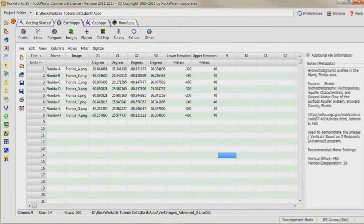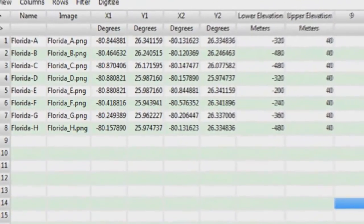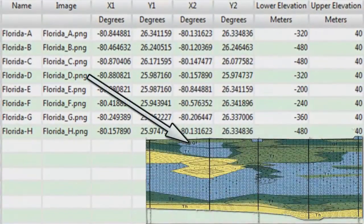In this example, a list of images representing geologic cross sections along with their endpoint coordinates are listed for each section.